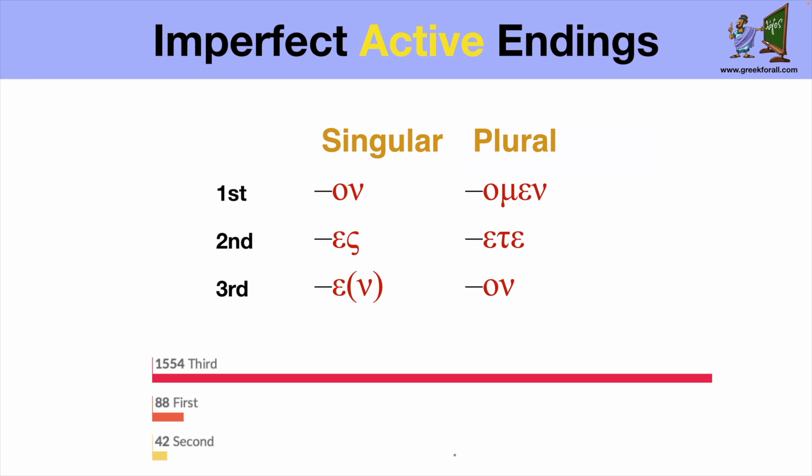One last thing is to see the distribution of the imperfect active verbs in the New Testament. As you can see, majority of them are of the third persons. So you are going to see the third person endings more often than any other ending. So this is where you need to focus. So now as we learned this, let's take a look at some examples.